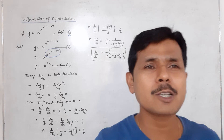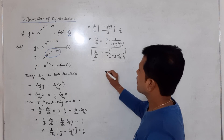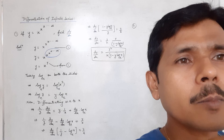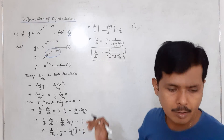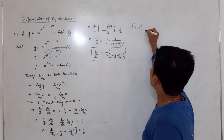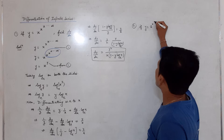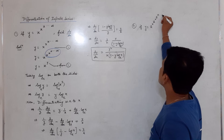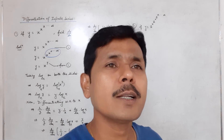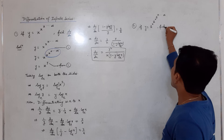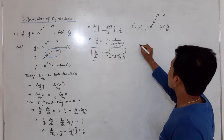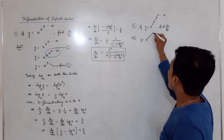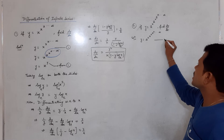We will be taking one more problem based on it. The question is: if y equals a to the power x, x to the power a to the power x, x to the power x, like this till infinity, find dy/dx. First, copy the question as given and name it as equation number one.